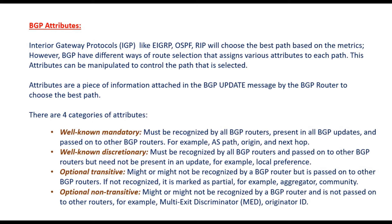The interior gateway protocols like EIGRP, OSPF, and RIP will choose the best path based on metrics. For example, EIGRP will use metrics like bandwidth, delay, load, MTU, and reliability to find the best path. OSPF considers bandwidth as 10 to the power of 8 divided by bandwidth. RIP uses hop count metrics to find the best path. However, in BGP, instead of using metrics, it makes use of attributes to select the best path.